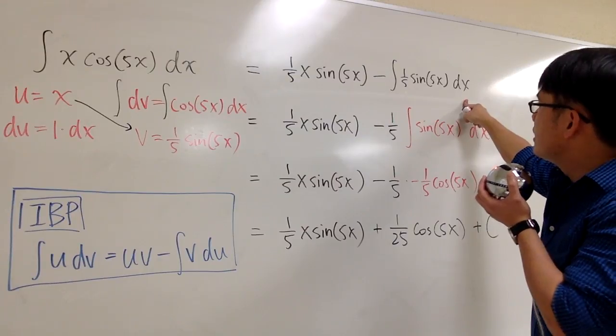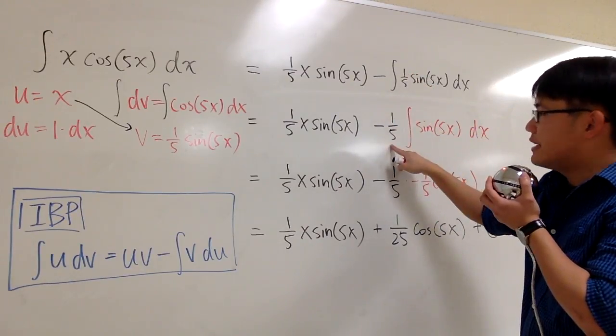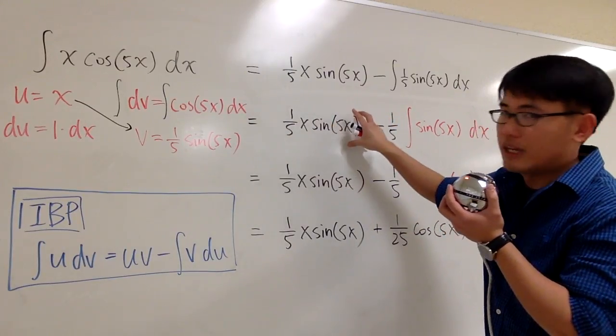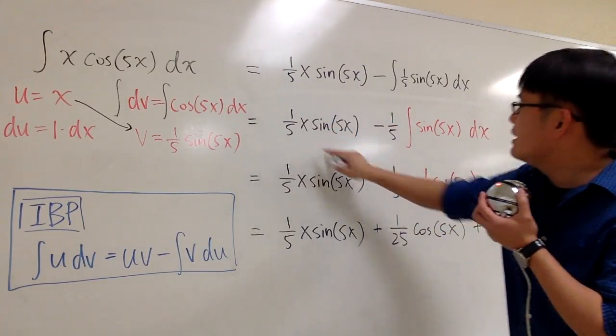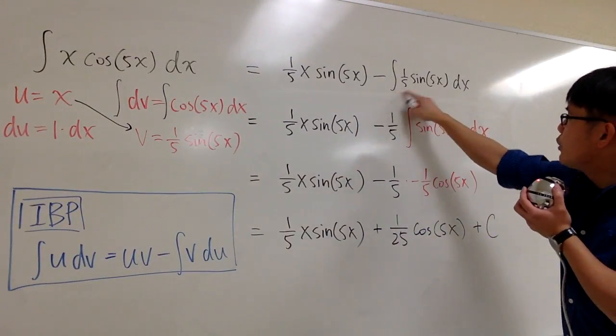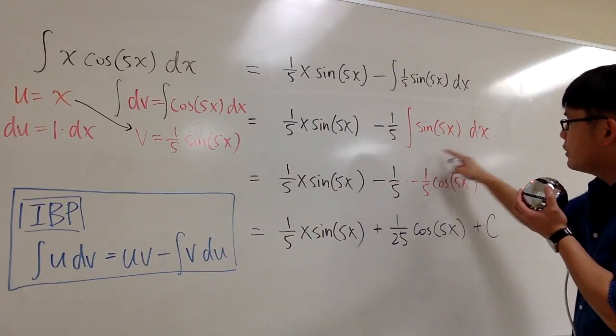But this is not that bad. Because, this is just a number, 1 fifth. I can take the 1 fifth outside. And then, I'm pretty much just rewrite this like a couple more times. So, I'll just copy this down right here. But then, I take out the 1 fifth. I'm just looking at the integral of sine of 5x. So, this is the integral I'm looking at.